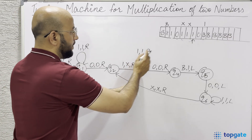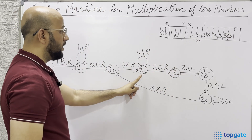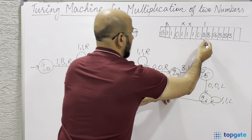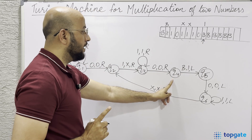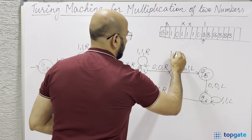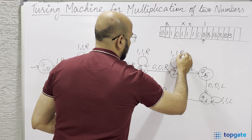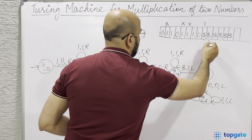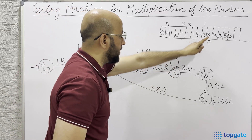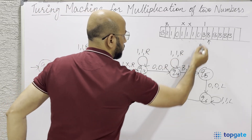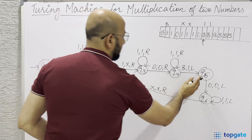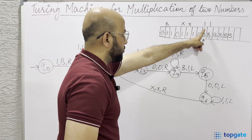At Q3, 1s are skipped and the 0 is skipped, reaching Q4 where the pointer points to a 1 in the output area. At Q4, I add a self loop: if you find a 1, keep it as 1 and go right. So all written ones are skipped until the pointer reaches the blank. At Q4, the blank is changed to 1 and we go left to Q5.